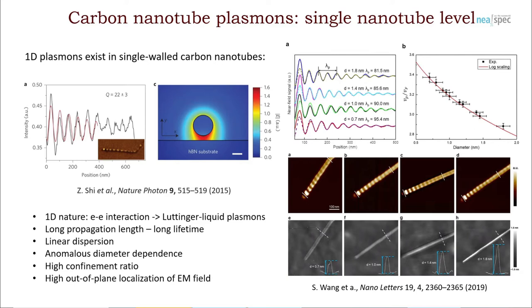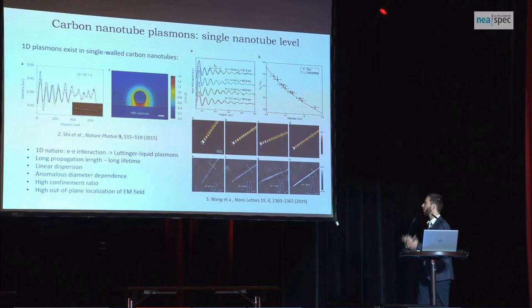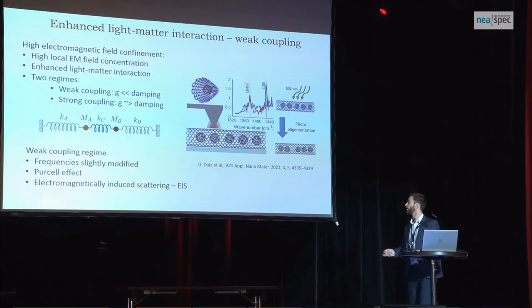Another very important property is that they provide very high wavelength confinement. We excite these plasmons with 10 micrometer wavelength infrared light, but they have a wavelength around 100 nanometers — that's 100 times confinement. As we can see from the simulations, the electric field of these plasmons is bound to the surface and decays very rapidly, which means we have very high out-of-plane and in-plane localization of the electromagnetic field, giving a very high density of electromagnetic fields, which is critical for strong light-matter interaction.